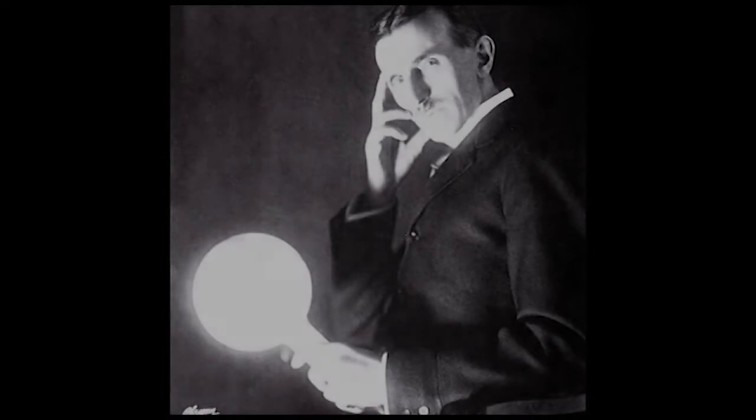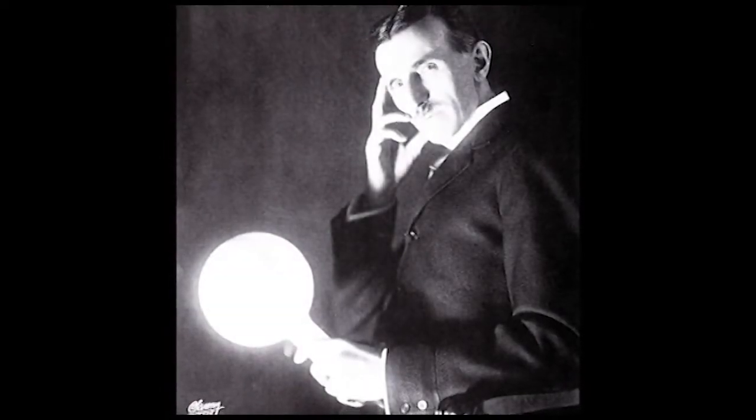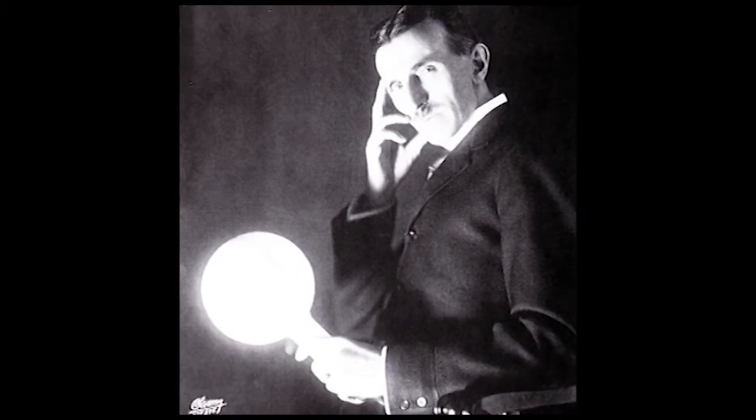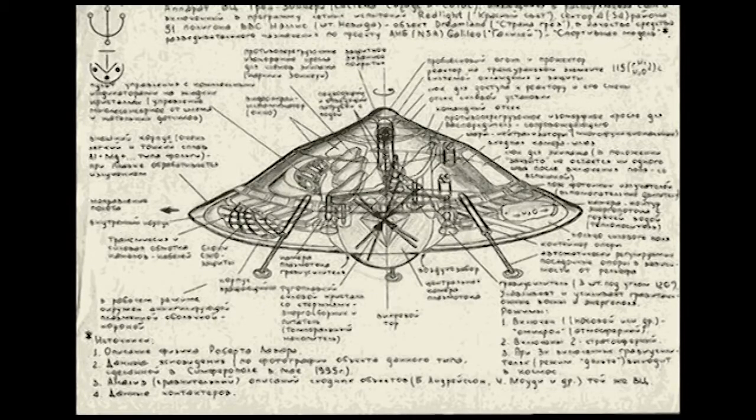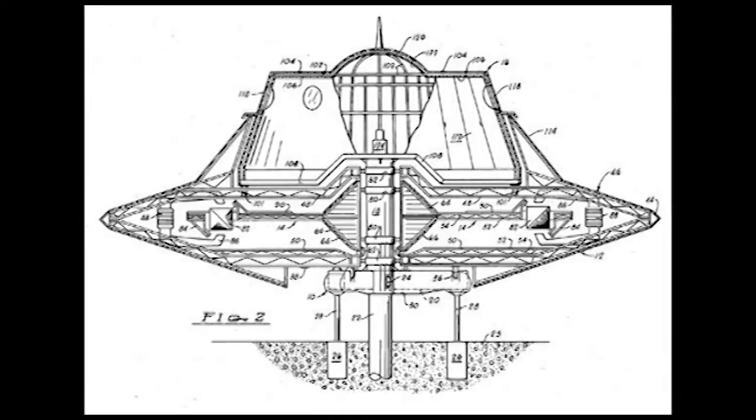In fact, Nikola Tesla registered a fascinating patent in 1928. Patent number 1655144 details a flying machine that strangely resembled both an airplane and a helicopter. But that was a patent for the vehicle, which needed a propulsion system.